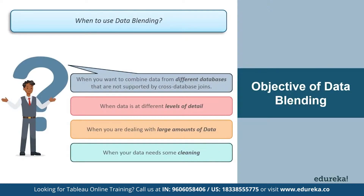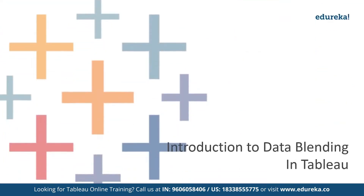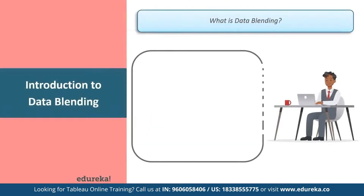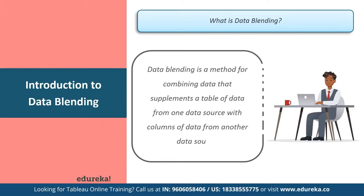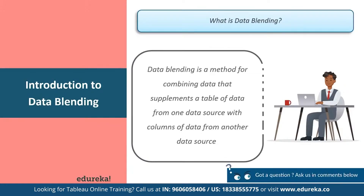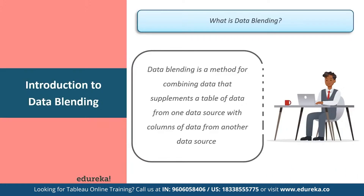Finally, you can use data blending when your data needs some cleaning. If your tables do not match up correctly after a join, set up data sources for each table, make any necessary customizations — which basically includes renaming columns, changing column data types, creating groups, and so on — then use data blending to combine the data. Now that we know when to use data blending, let's find out what it actually means. Data blending is a method to combine data that supplements a table from one data source with another. For people who use SQL, it is basically an advanced version of a left join.